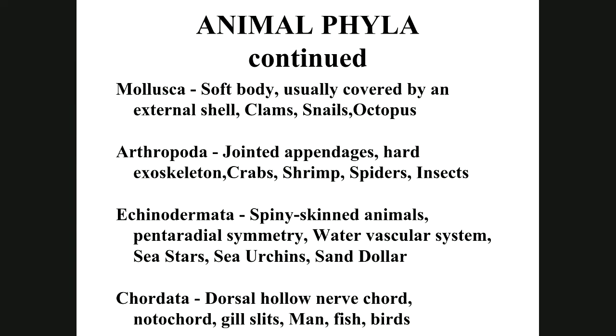Chordata — they have a vertebral column with a nerve cord in the middle. Humans, fish, birds, deer, and ducks all fall into Chordata.